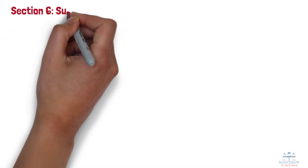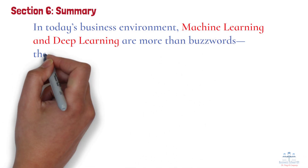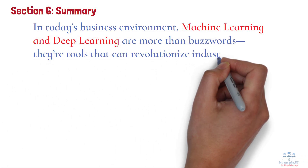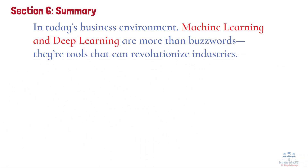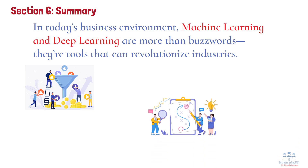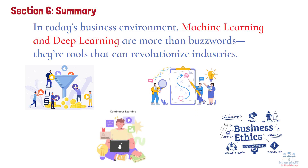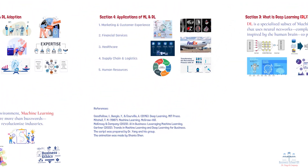Section 6: Summary. In today's business environment, machine learning and deep learning are more than buzzwords — they're tools that can revolutionize industries. From enhancing customer experiences to optimizing operations, their applications are vast and impactful. However, success with ML and DL requires more than just technology; it demands a strategic approach, a commitment to ethical practices, and a focus on continuous learning. That's all for today's topic. If you found this video helpful, don't forget to like, subscribe, and leave your comments below. Thanks for watching, and I'll see you next time.